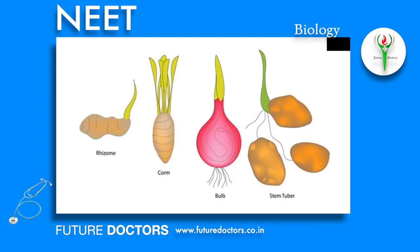Underground Stems: The stems of some plants lie below the soil surface. They are non-green and store food as means of perennation and vegetative propagation. Rhizome is a prostrate thick stem growing horizontally beneath the soil surface, with distinct nodes and internodes. The nodes bear small scale leaves with buds in their axils.